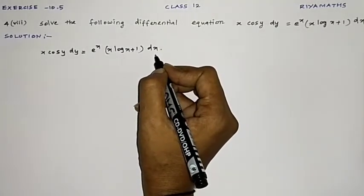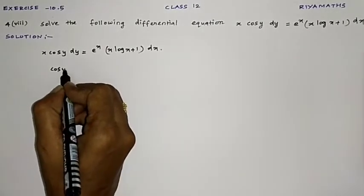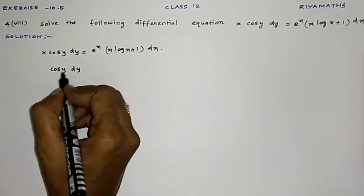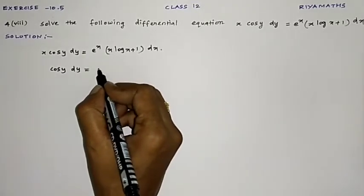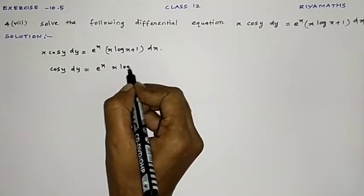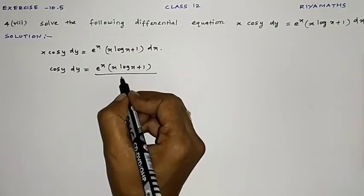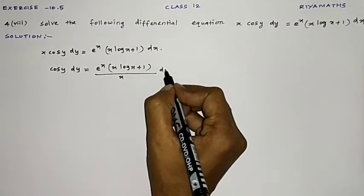So this we'll solve using variable separable method. Here cos y dy, now dy is with y term, but this x shouldn't be here.